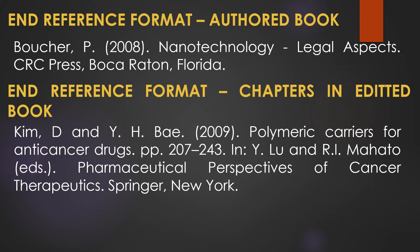For an authored book: author's name, comma, initials, full stop, year in brackets, title of the book in italics, publisher's name, city of the publisher, and country of the publisher. For a chapter in an edited book: author's name, comma, initials, full stop, year in brackets, title of the chapter, page number of the chapter, editor's name(s), title of the book, publisher's name, and city of the publisher.